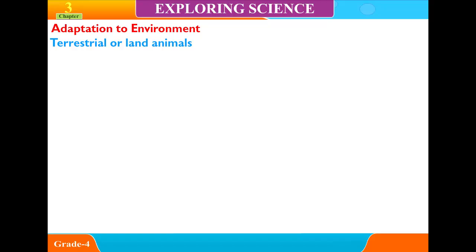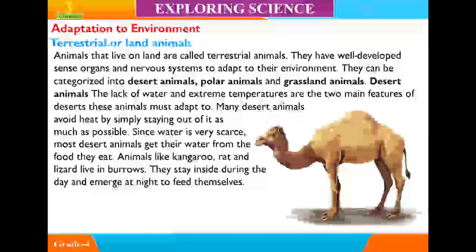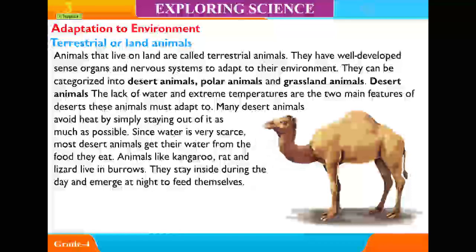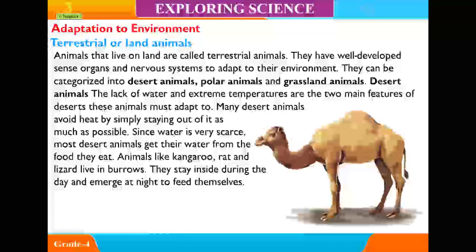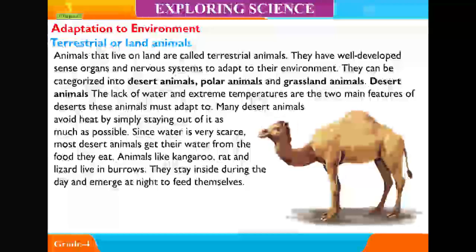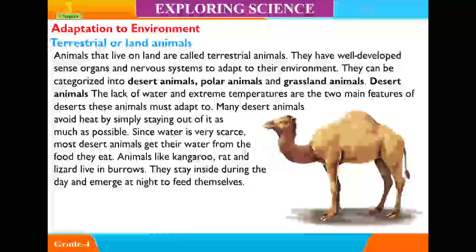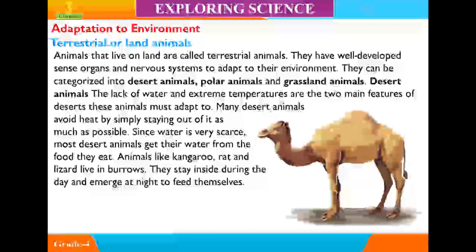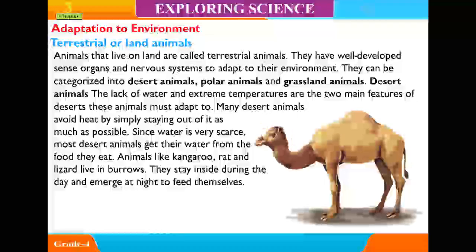Terrestrial or land animals. Animals that live on land are called terrestrial animals. They have well-developed sense organs and nervous systems to adapt to their environment. They can be categorized into desert animals, polar animals, and grassland animals.